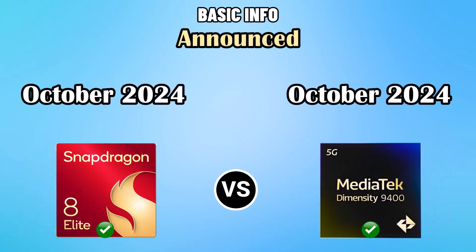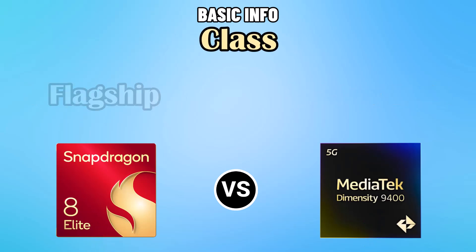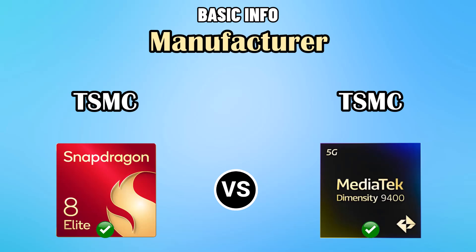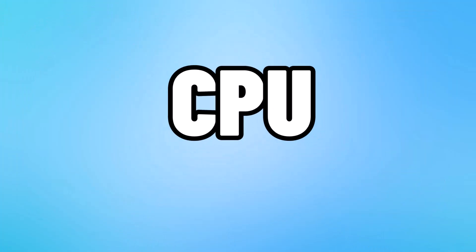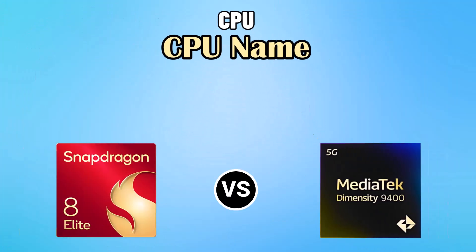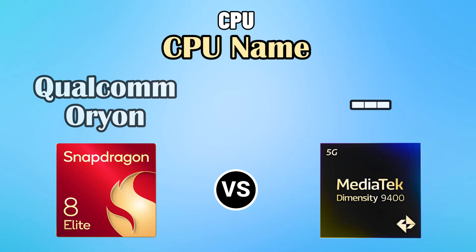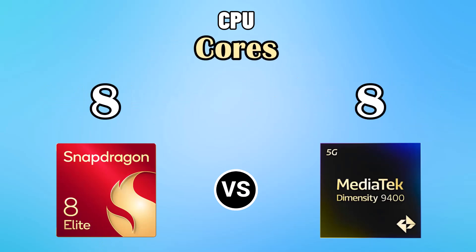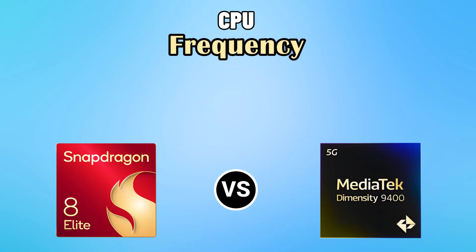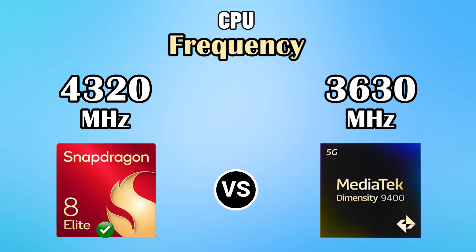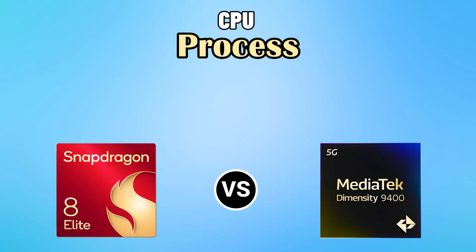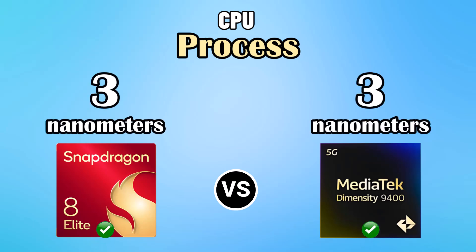Basic Information: Announced, Class, Manufacturer. CPU: CPU Name, Architecture, Cores, Frequency, Instruction Set, Process, L2 Cache.